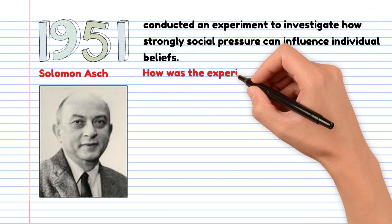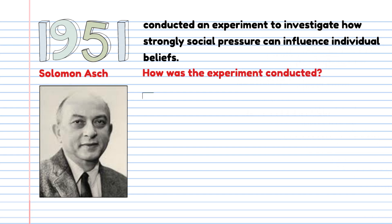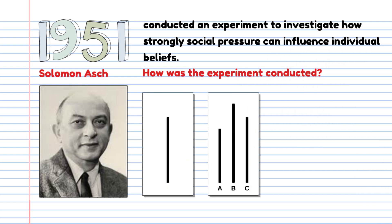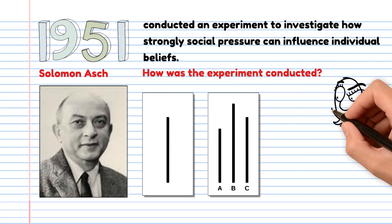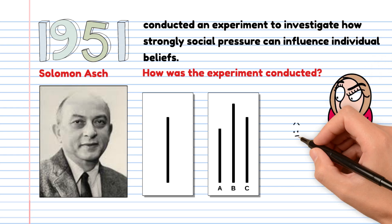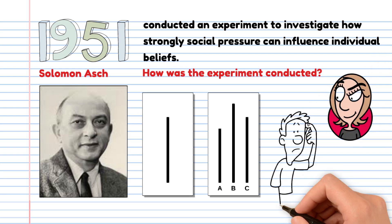How was the experiment conducted? Participants were asked to evaluate the length of lines. They did this in the presence of a group of actors who gave incorrect answers. The goal was to see if the participants would change their answers under group pressure.